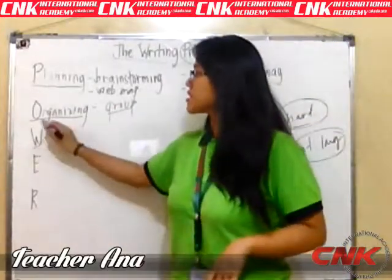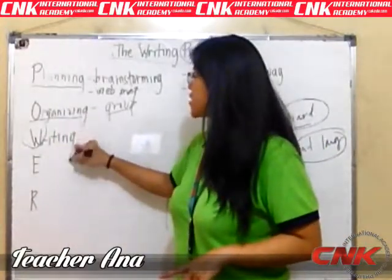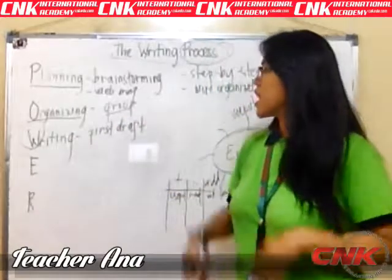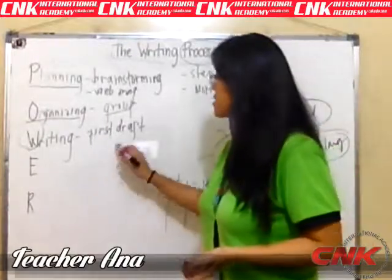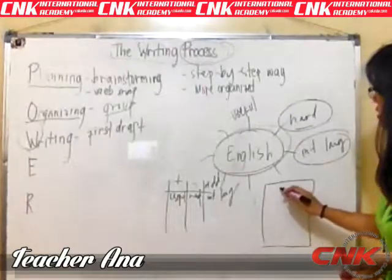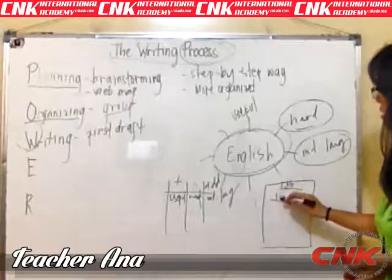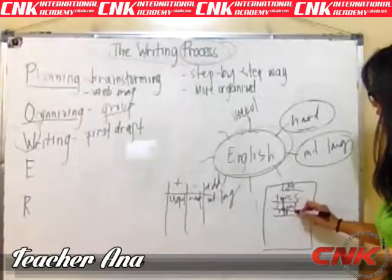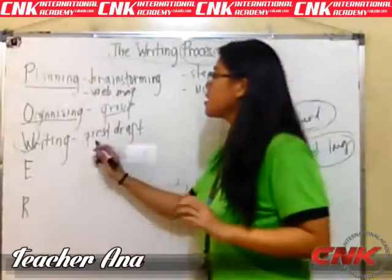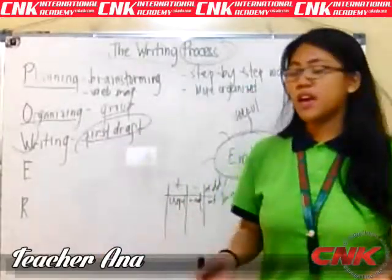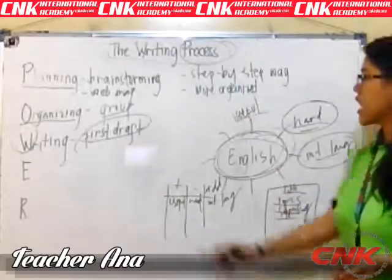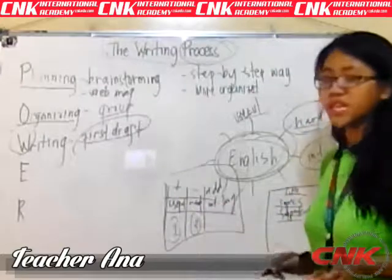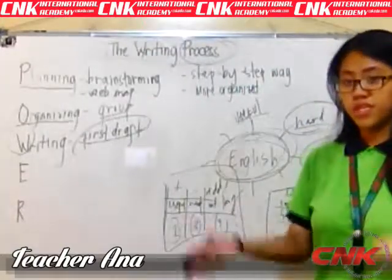The next one — what do you think is W? W is writing. In this step, you will write your first draft. When writing your first draft, it will be okay for you to have some mistakes. We will write the title first, then after the title we will write the topic sentence. Next are the supporting details — I will explain them further next time. Just remember, this is when you will write anything that you want about your topic, and you can use all of the vocabularies that you organized. Your organization will have, for example, your first paragraph, second paragraph, and third paragraph.